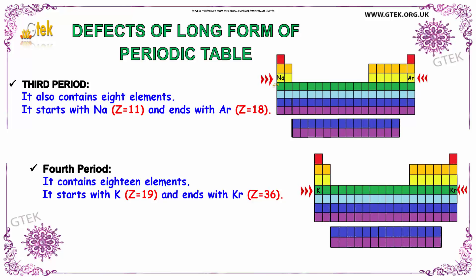The atomic number of sodium is 11 and argon is 18. The fourth period contains 18 elements and starts with potassium and ends with krypton. The atomic number of potassium is 19 and krypton is 36.